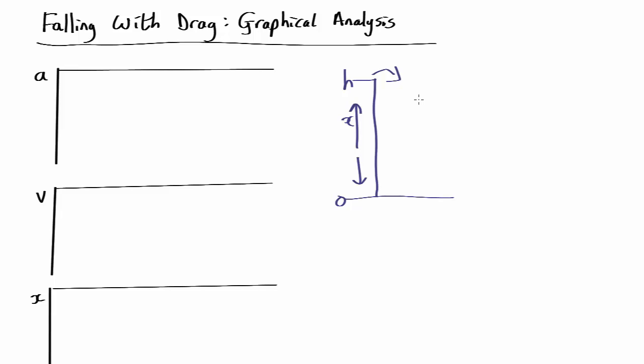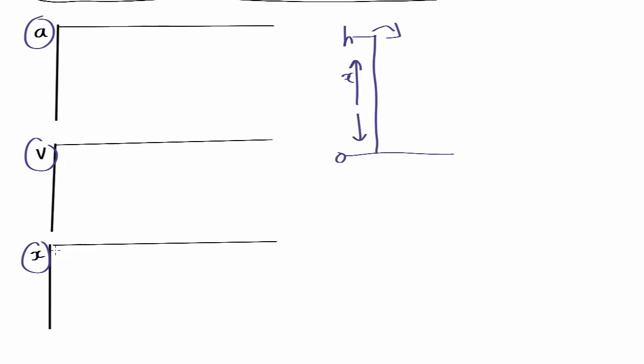So what do we know? We've got three things we can plot: height, velocity and acceleration. Now we know that we're starting at height h and we're ending at height zero. So somehow we have to get from there down to there.